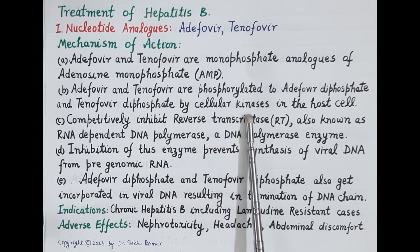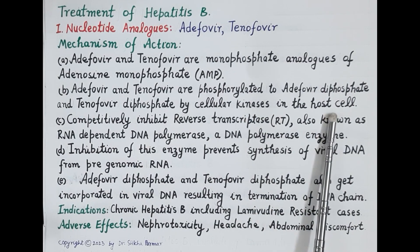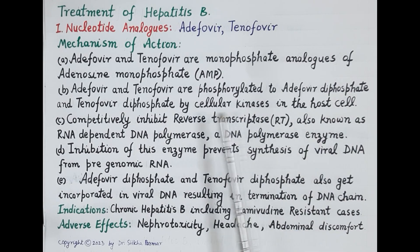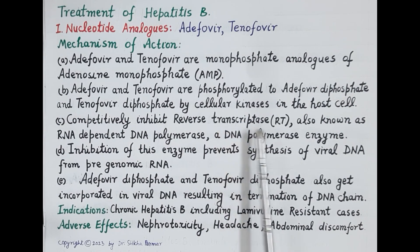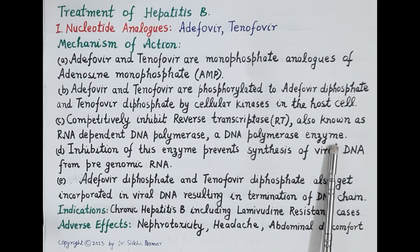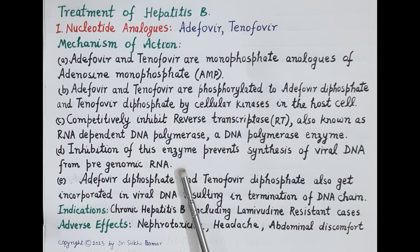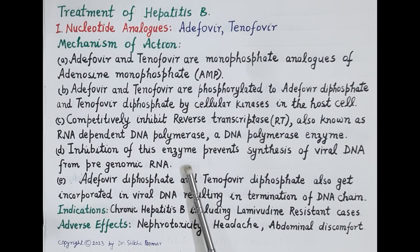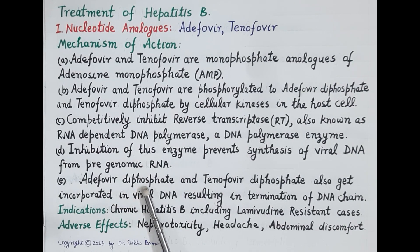Adefovir diphosphate and tenofovir diphosphate competitively inhibit the enzyme reverse transcriptase, also known as RNA-dependent DNA polymerase. Inhibition of this enzyme prevents the synthesis of viral DNA from pre-genomic RNA, thereby inhibiting replication of hepatitis B virus.